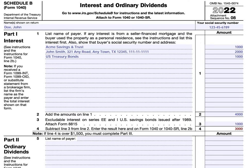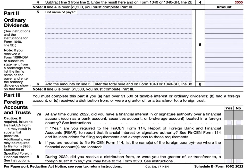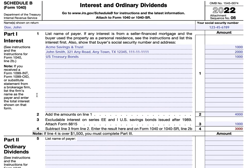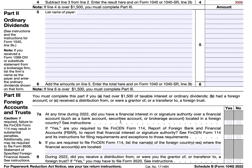If this amount happens to be over $1,500, then you have to complete part three. Disregard the fact that it says foreign accounts and trusts — anyone that has over $1,500 in either part one or part two needs to complete part three, even if it's a straightforward no, no, and no.